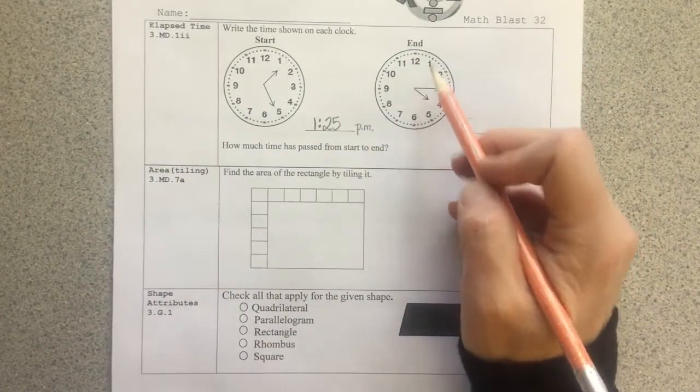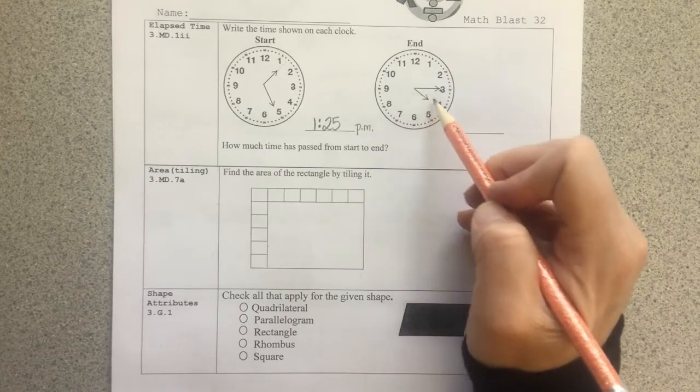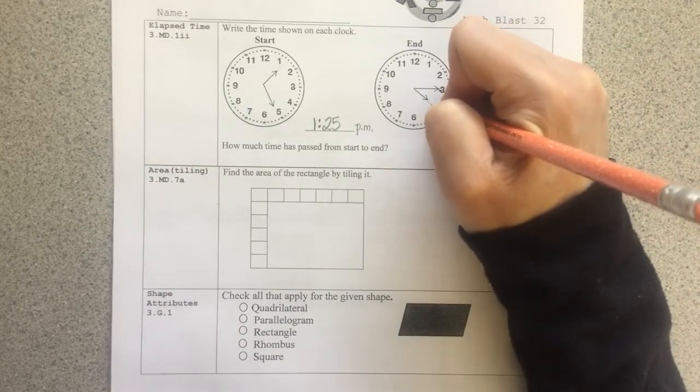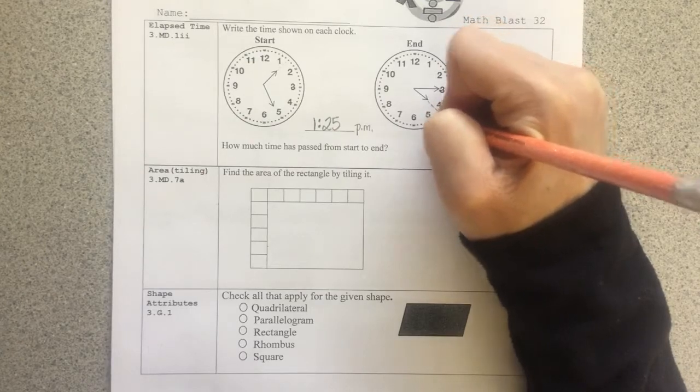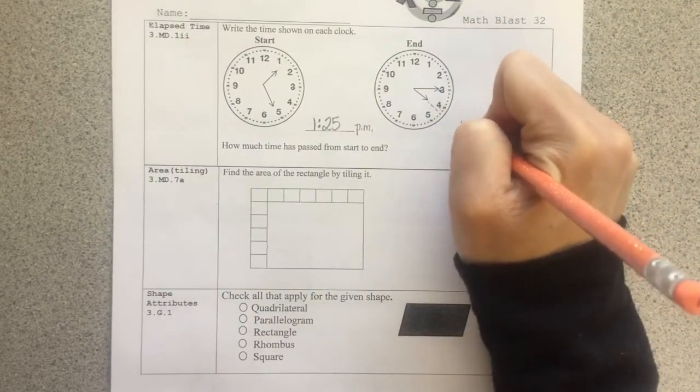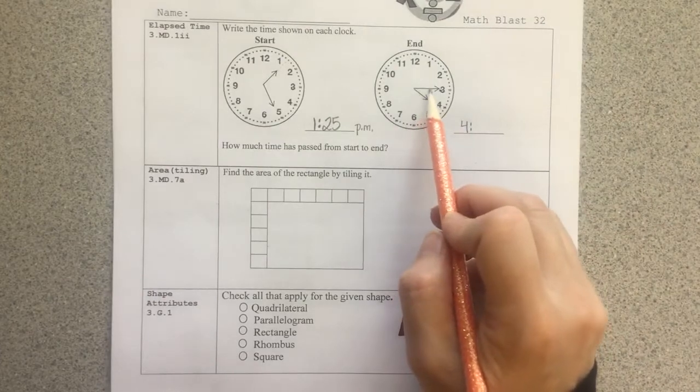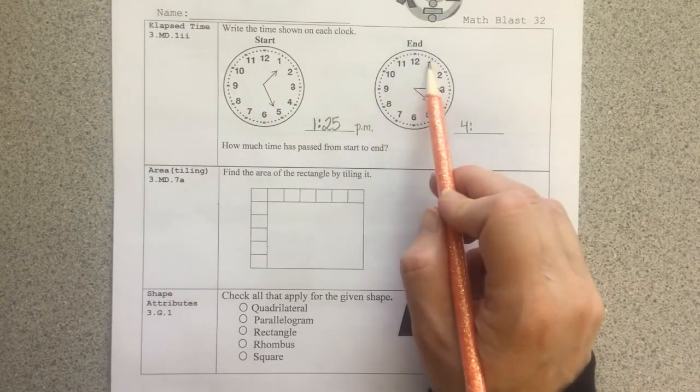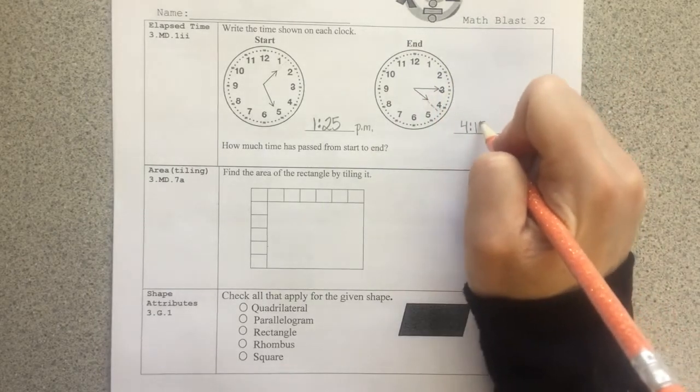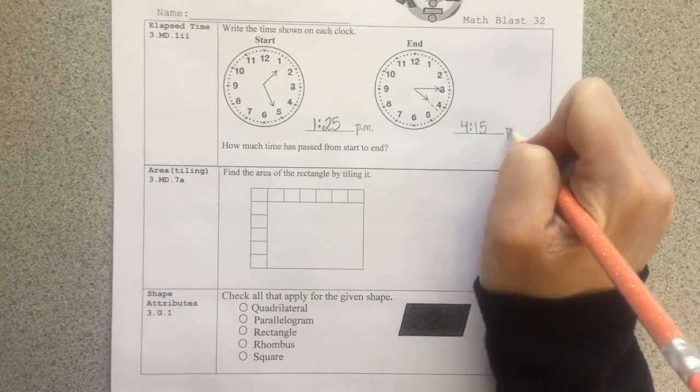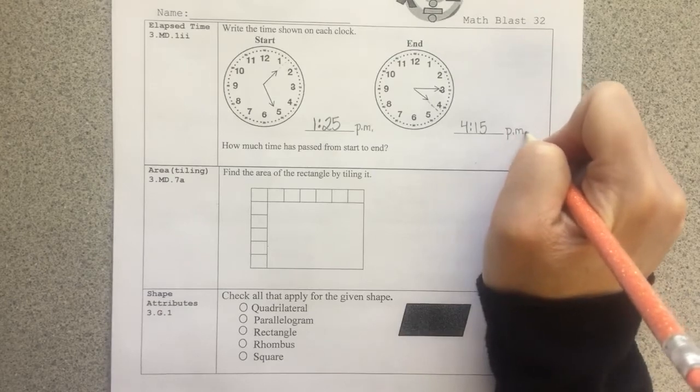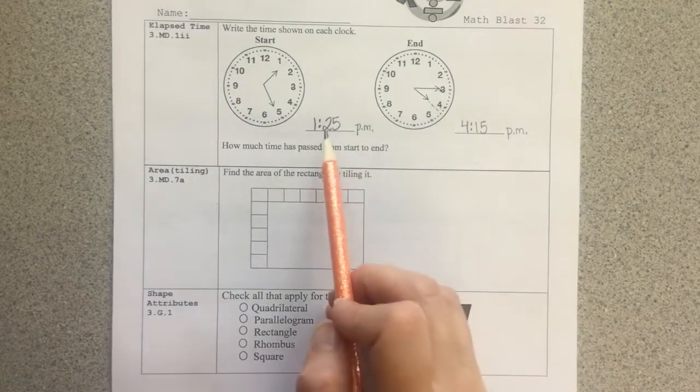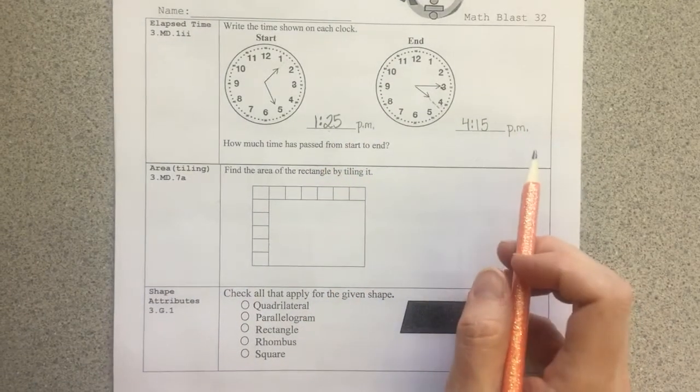And then I look here at the end time. Again, I'm going to look at the short hand first to determine the hour. It is right past the four, but not quite to the five yet. So we're still in the four o'clock hour. To determine the minutes, I'll look at the long hand and I'm going to count by fives starting at o'clock. 5, 10, 15 minutes past four o'clock. 4:15. And again, we're calling this PM. So how much time has elapsed from the start to end? 1:25 to 4:15.